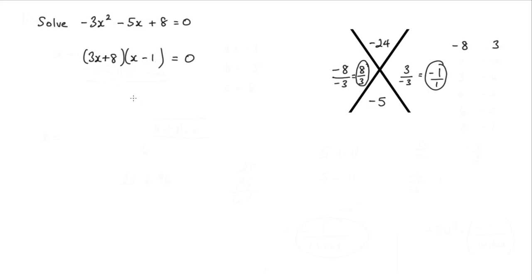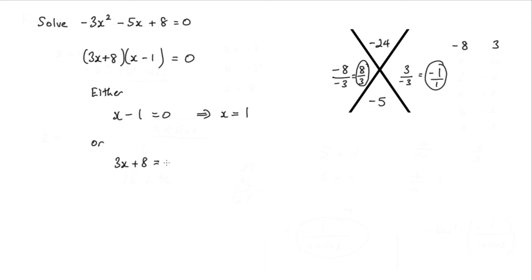So what we have is that either x minus 1 equals 0, in which case x is equal to 1, or 3x plus 8 equals 0, which implies that x is equal to negative 8 over 3.